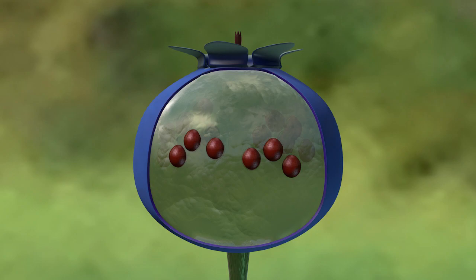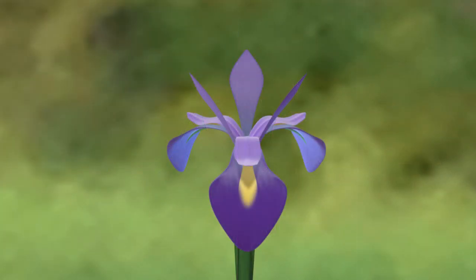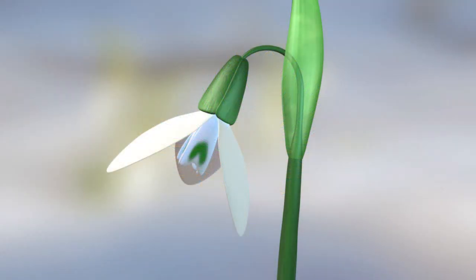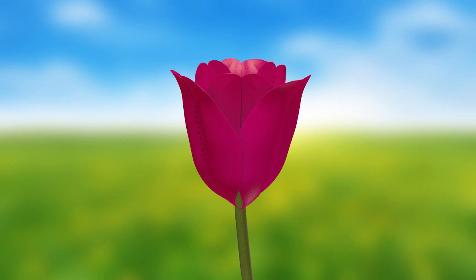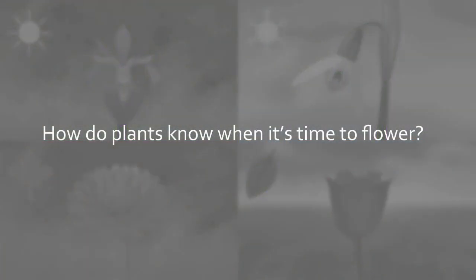Plant species do not all flower at the same season. For example, the iris flowers in the summer, the chrysanthemum flowers in the fall, the snowdrop in the winter, and the tulip in the spring. The season in which flowering occurs is crucial for the reproductive success and for the survival of that species.